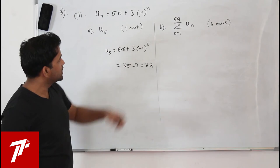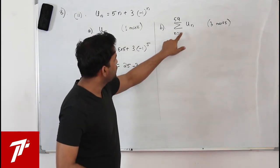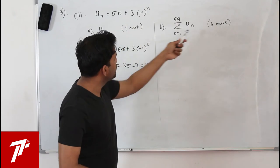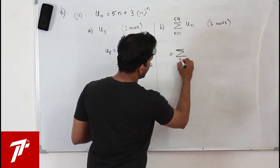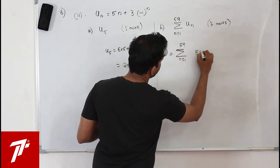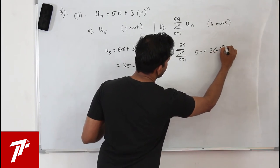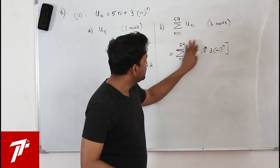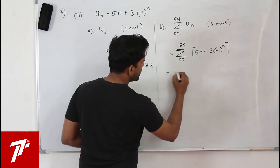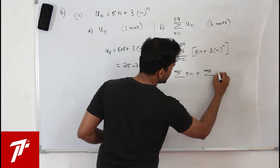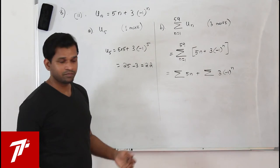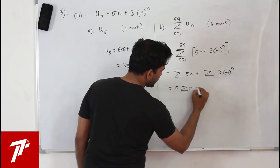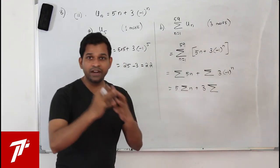The second part has three marks: find the sum from n=1 to 59 of u_n = sum of (5n + 3(minus1)^n). Split this as 5·(sum of n from 1 to 59) plus 3·(sum of (minus1)^n from 1 to 59).